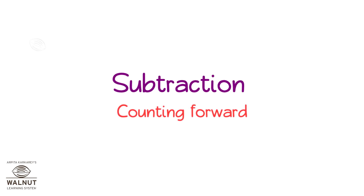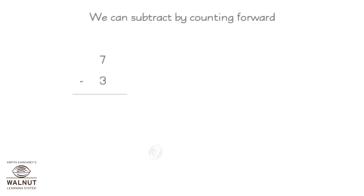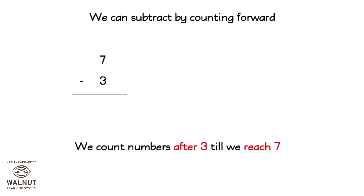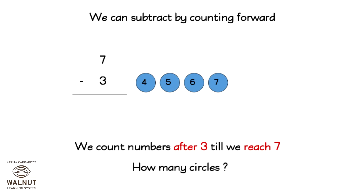Subtraction: counting forward. We can subtract by counting forward. 7 minus 3 — how do we solve this? We count numbers after 3 until we reach 7: 4, 5, 6, and 7. How many circles? 4. So 7 minus 3 is equal to 4.